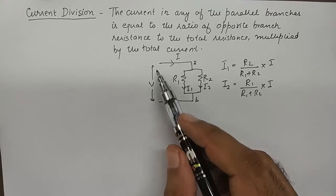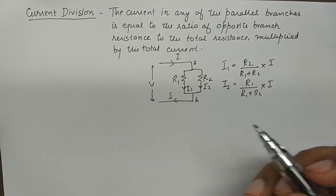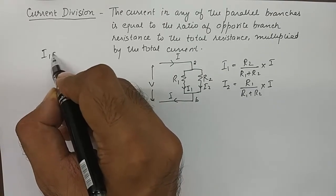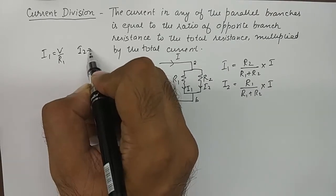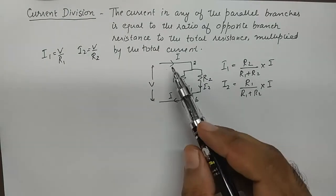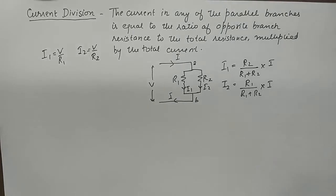Now whenever two branches are in parallel, we know that the voltage across them will be the same. So I can say I1 equals V upon R1 and I2 equals V upon R2, because the voltage across these two parallel branches at point A and B is V.